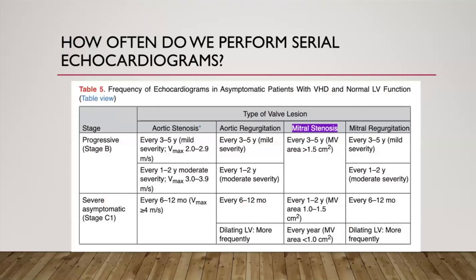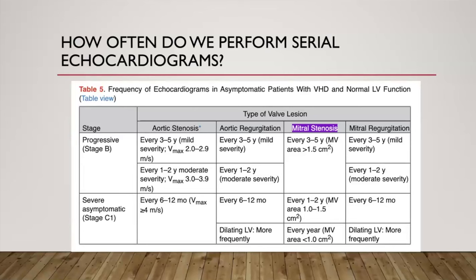How often do we perform serial echocardiograms? For stage B or mild MS with MVA above 1.5 cm², the ACC recommends transthoracic echo every three to five years. When MVA is between 1.0–1.5 cm², echo should be performed every one to two years. Once MVA falls below 1.0 cm², echo is performed annually or sometimes every six months.